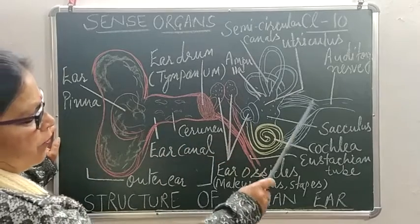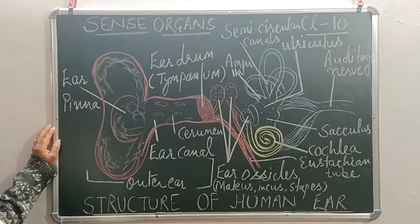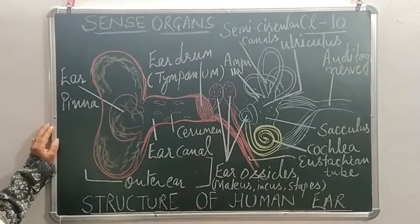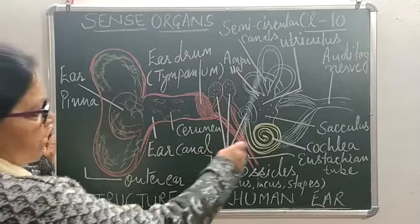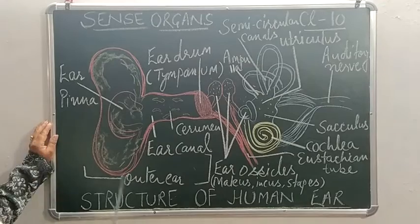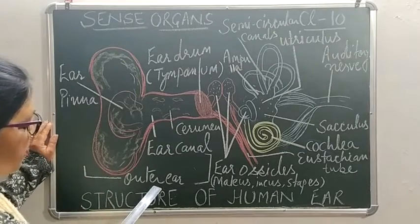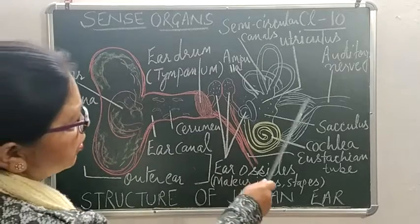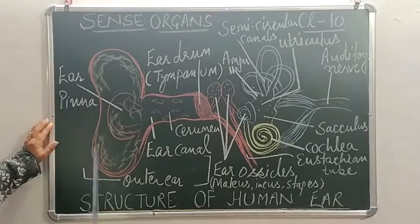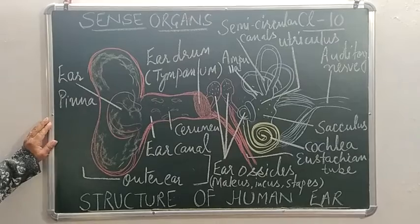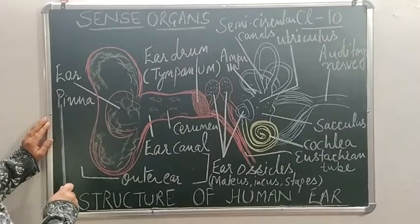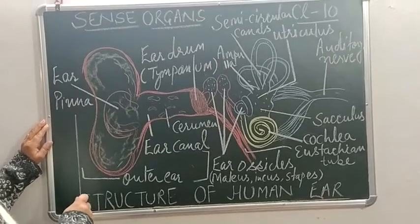It must be looking like a very complicated structure, but if we divide the whole structure of the ear into three parts it will be easy to understand. The whole ear is divided into three main parts: first is the outer ear, then the middle ear, and then the internal ear. In the outer ear, this visible part is called the external ear or ear pinna.